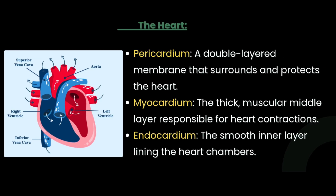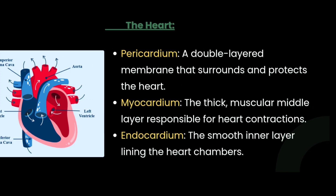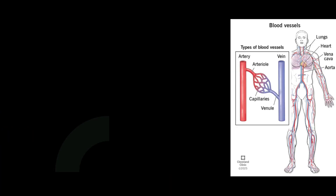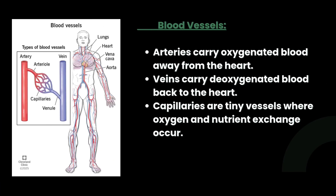The second component covers the layers of the heart. The pericardium is a double-layered membrane that surrounds and protects the heart. The myocardium is the thick muscular middle layer responsible for heart contraction. The endocardium is the smooth inner layer lining the heart chambers.